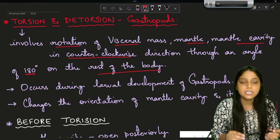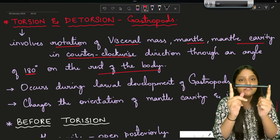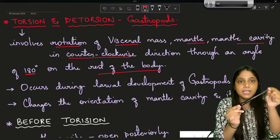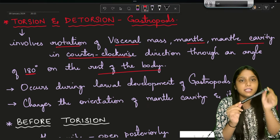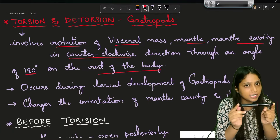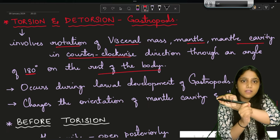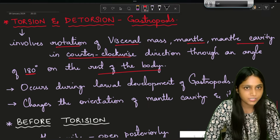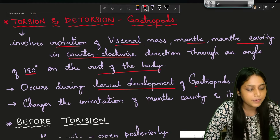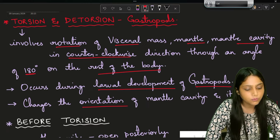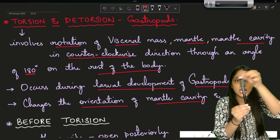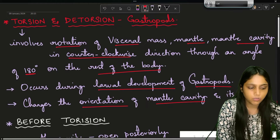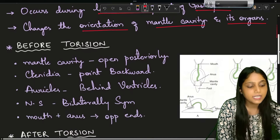For example, consider this pen to represent the visceral mass, mantle, and mantle cavity of the gastropods. These three structures in the organism undergo 180 degrees rotation in an anti-clockwise direction - that is nothing but torsion. Torsion occurs during the larval development of the gastropods and involves a change in orientation of the mantle cavity and its organs.